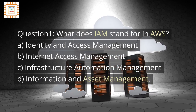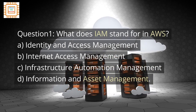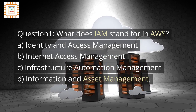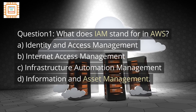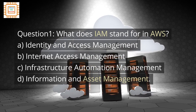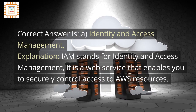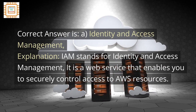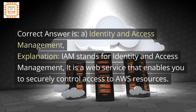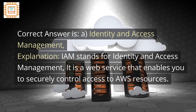A. Identity and Access Management. B. Internet Access Management. C. Infrastructure Automation Management. D. Information and Asset Management. The correct answer is A: Identity and Access Management. IAM stands for Identity and Access Management. It is a web service that enables you to securely control access to AWS resources.